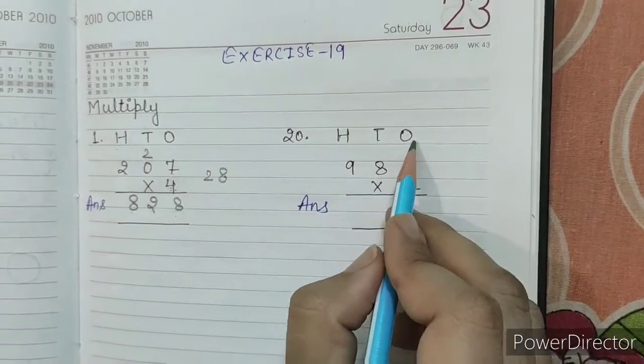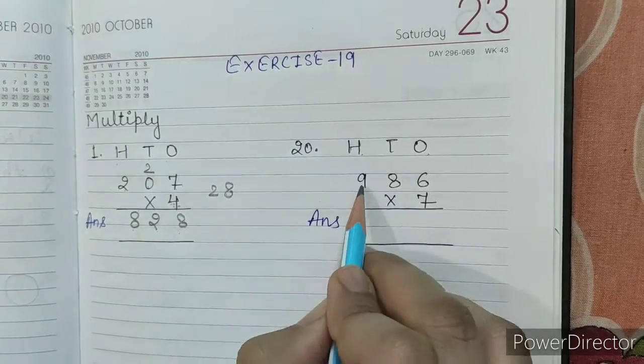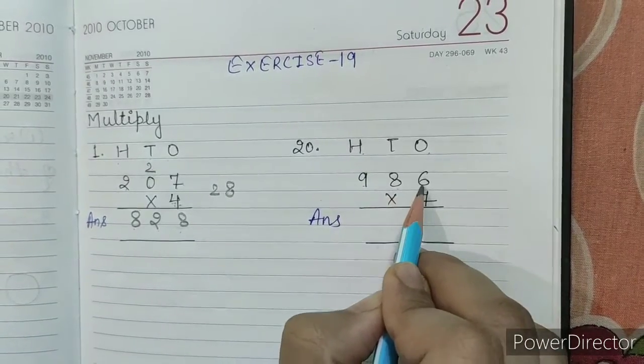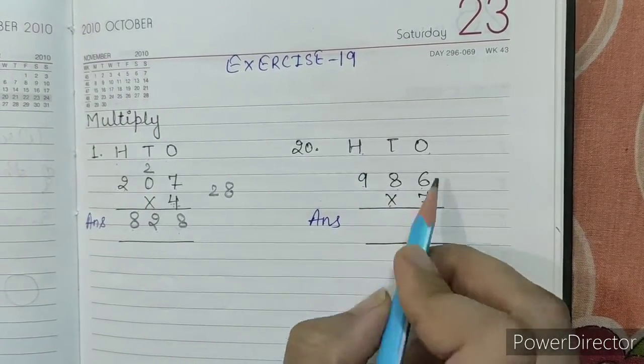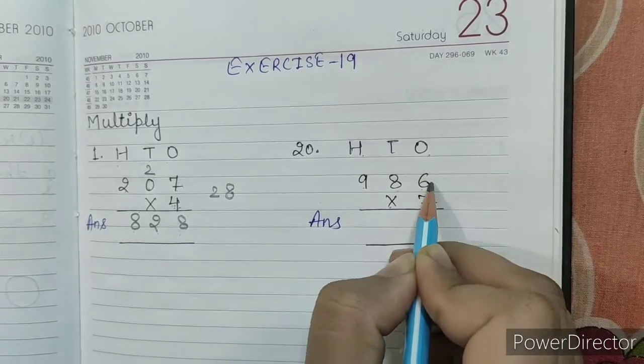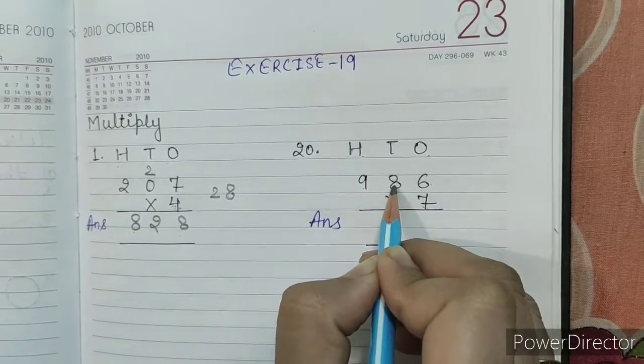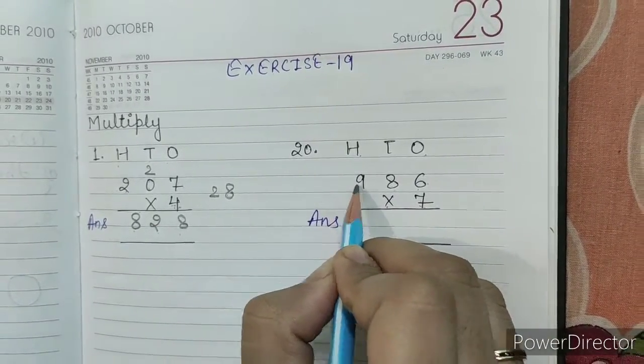Question number 20. Ones, tens, hundreds. 986 into 7. So, first of all, we will multiply 7 into 6. Then 7 into 8. Then 7 into 9.